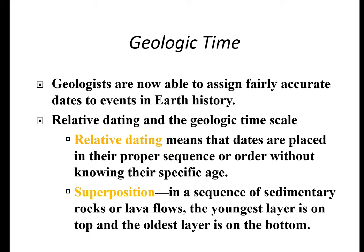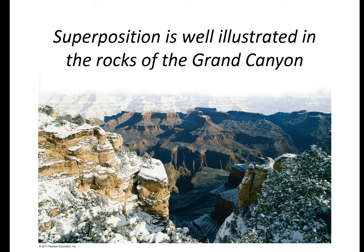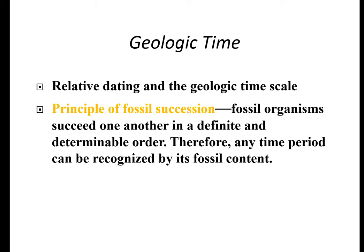Geologists are now able to assign fairly accurate dates to events in Earth's history. We do this in two ways. First, relative dating, which means dates are placed in their proper sequence or order without knowing their specific age. We also look at superposition, which is the sequence of sedimentary rocks or lava flows where the youngest layer is on top and the oldest layer is on the bottom — we can see this in pictures of the Grand Canyon. We can also look at the principle of fossil succession: fossil organisms succeeded one another in a definite and determinable order, so any time period can be recognized by its fossil content.